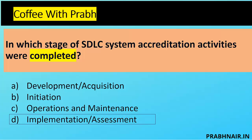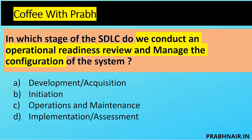This next question is a bit tricky: In which stage of the SDLC do we conduct an operational readiness review and manage the configuration of the system? Options are: A — Development/Acquisition, B — Initiation, C — Operation and Maintenance, D — Implementation/Assessment. During Development/Acquisition we are coding or acquiring — there is no configuration management of a live system yet, so A is removed. In Initiation we are trying to understand requirements, so B is removed. Implementation/Assessment is where we obtain accreditation, so D is also removed.